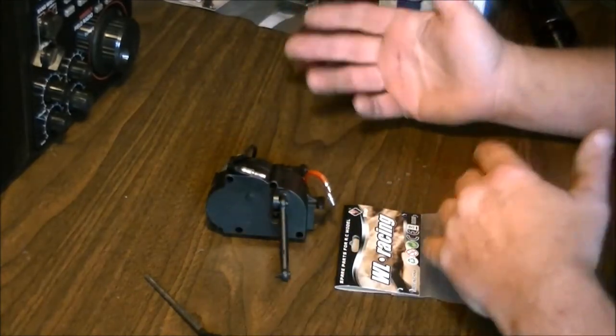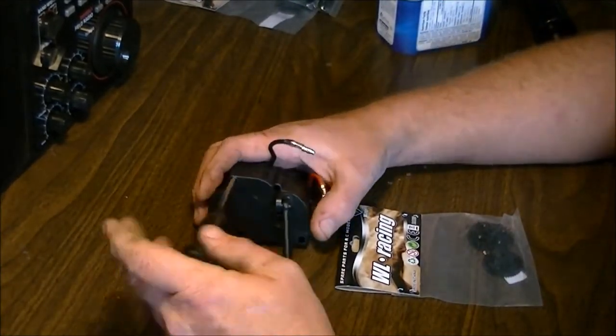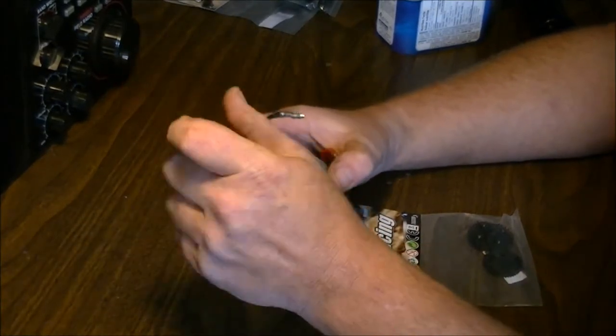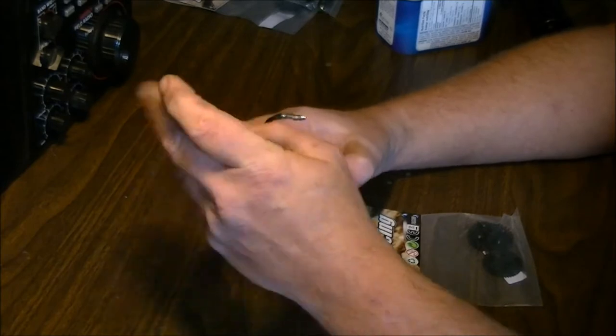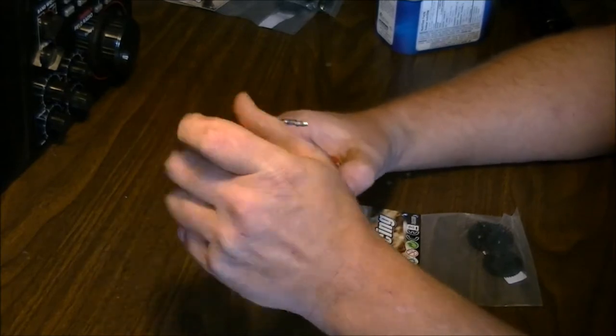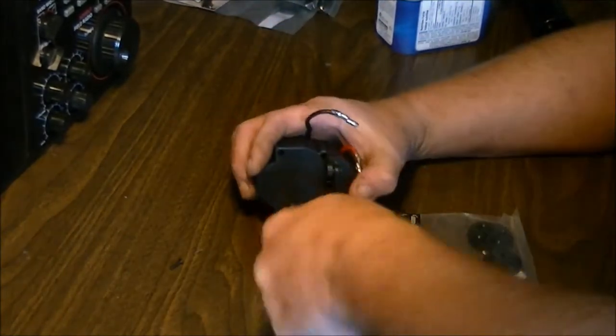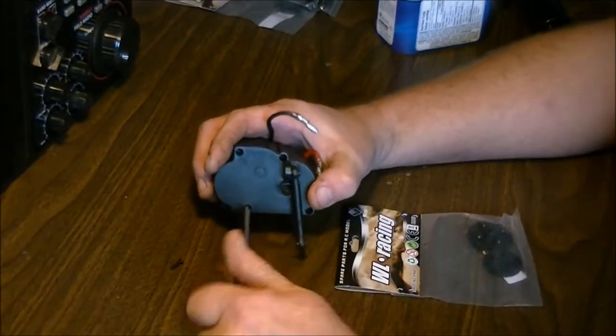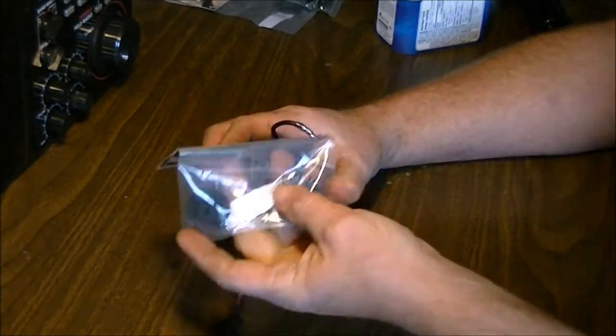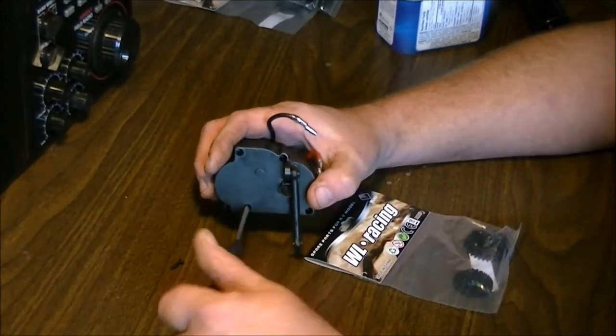Once you've removed your transmission, I've already got mine out, you're going to want to crack it apart. Now I've already had this apart once. I've been waiting for my parts to show up. They finally got in and so now it's time to rebuild this tranny and then I've got a second one I'm actually going to put together as a swap and go. So I ordered actually a bunch of these extra spur gears. You get a package of two gears.